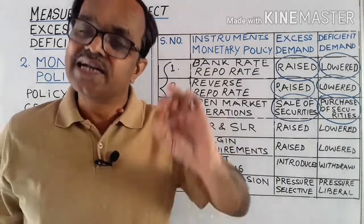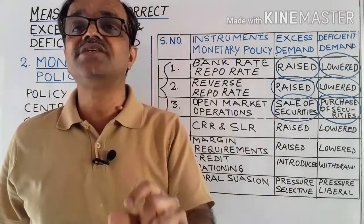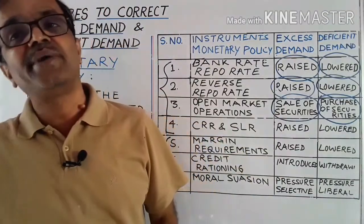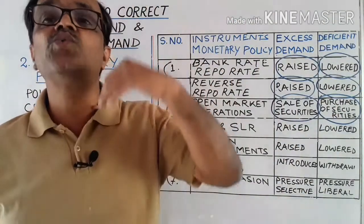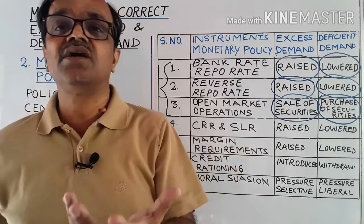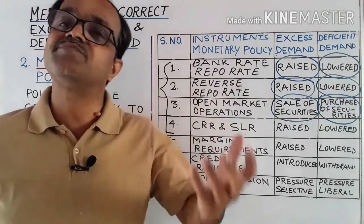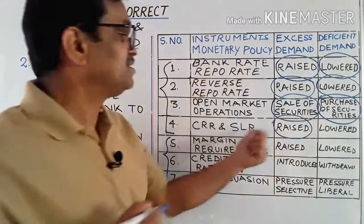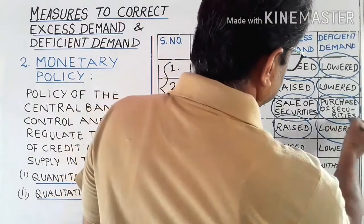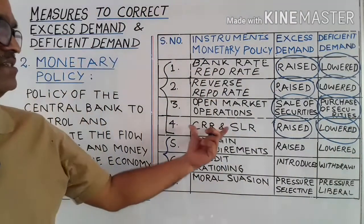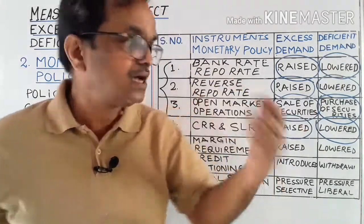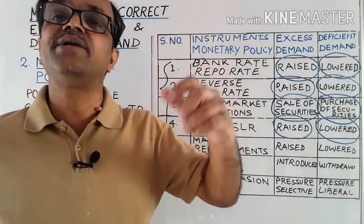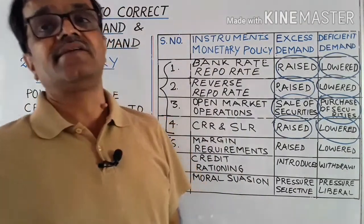Number four is CRR (Cash Reserve Ratio) and SLR (Statutory Liquidity Ratio). If CRR and SLR are higher, more cash is locked up, reducing the bank's credit creation capacity. During excess demand, the central bank raises CRR and SLR. During deficient demand, CRR and SLR are decreased so that cash reserves with commercial banks are more, resulting in increased credit creation capacity and higher aggregate demand.